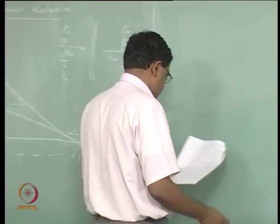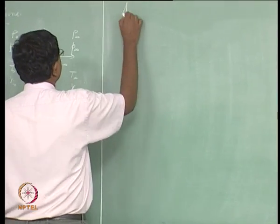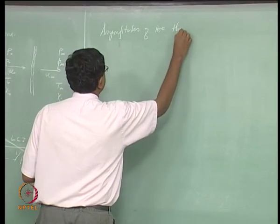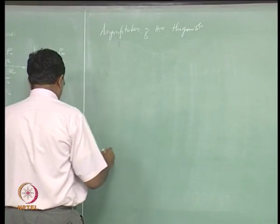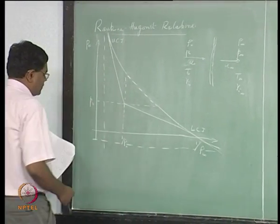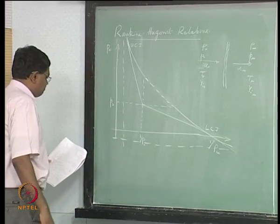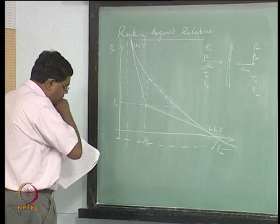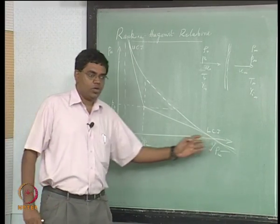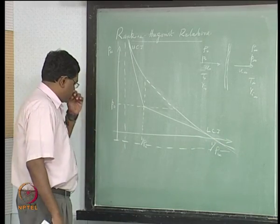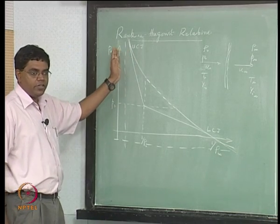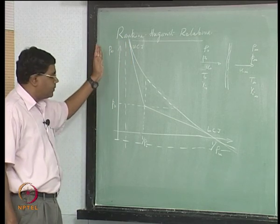Let us now look at the asymptotes of the Hugoniot. We can show that the asymptotes of the Hugoniot curve are found by substituting 1/ρ∞ → ∞ and finding the value of p∞, and conversely by substituting p∞ = ∞ in the Hugoniot relation and finding the value of 1/ρ∞.